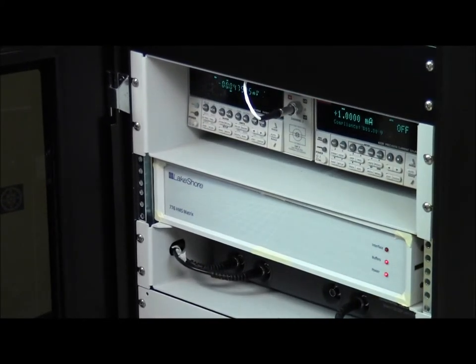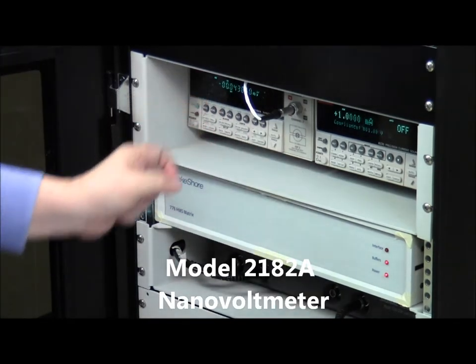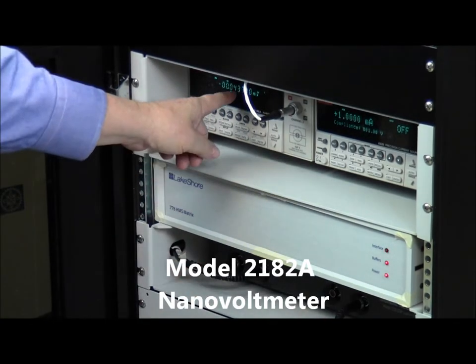We need a voltmeter to measure DC voltages. And for that function we use the Keithley 2182A Nanovoltmeter. That's here.